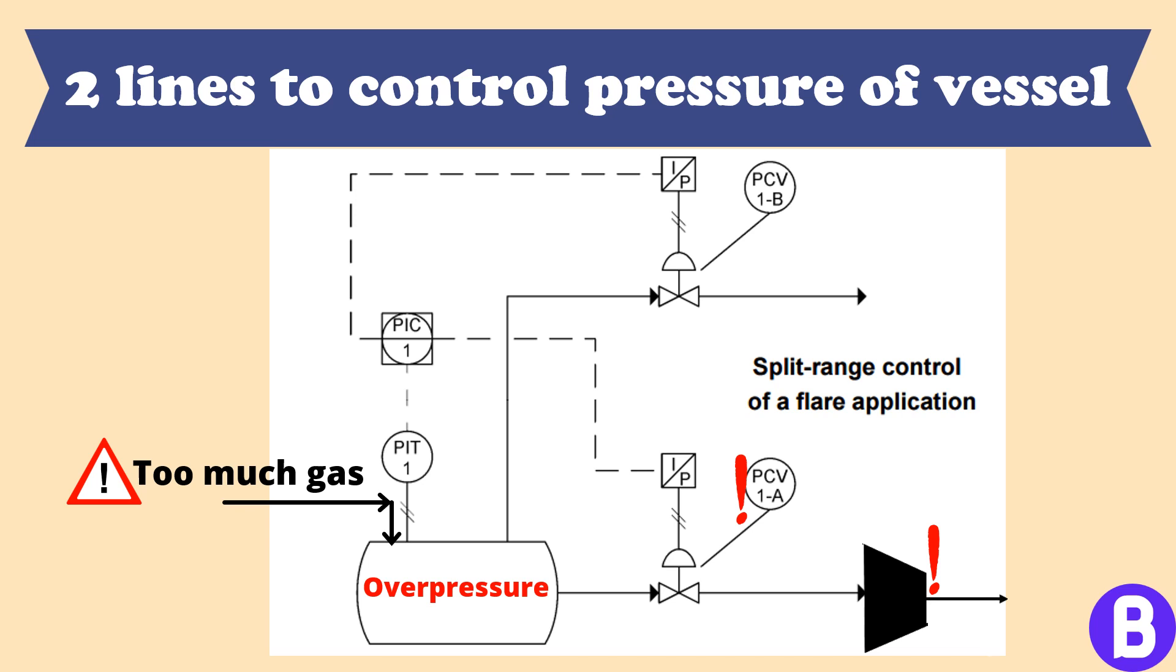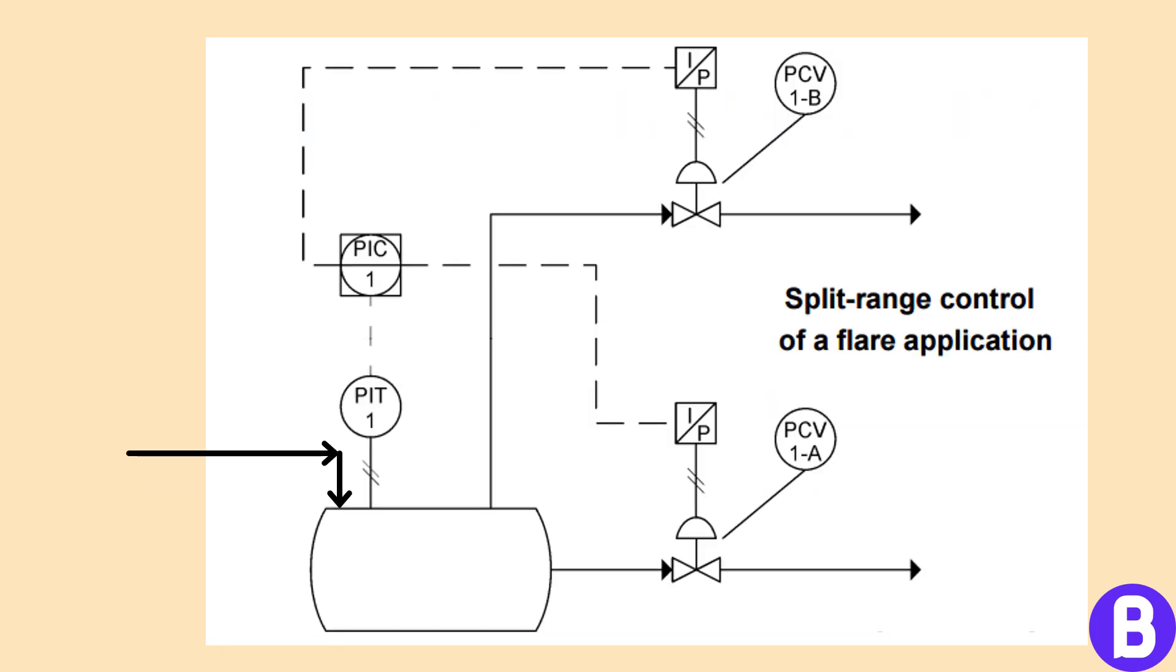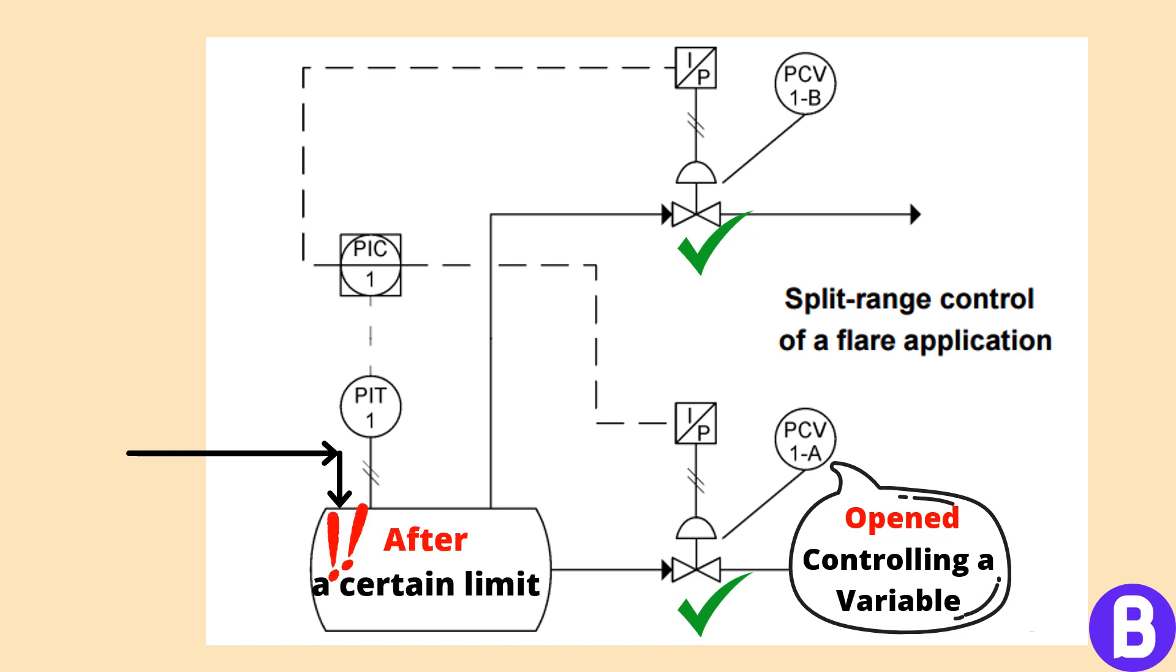Now if too much gas entered the vessel that the compressor or facility downstream pressure control valve 1a cannot handle, this would lead to an overpressure in the vessel. Here comes the job of pressure control valve 1b, it starts to open and send the excess gas to the flare. Don't forget that pressure control valve 1a is now fully open. This is an example of split range control. We have two valves, the opening of one valve is normally varied against the variable to be controlled up to a certain limit. After this limit, the other valve starts to adjust while the first valve is fully open or fully closed. There are many other examples and forms. The type and application of a split range control depend on the criticality of the parameter to be controlled.